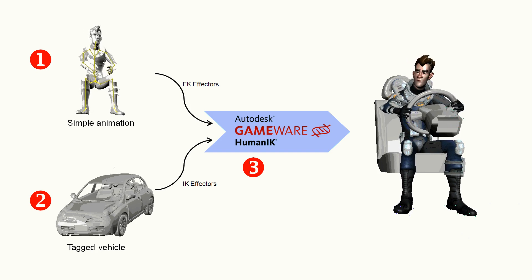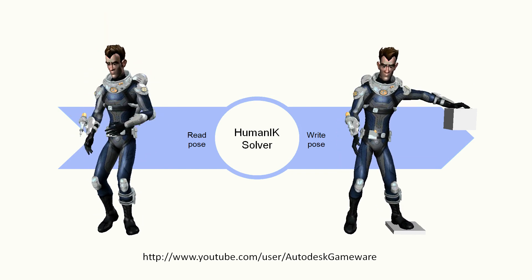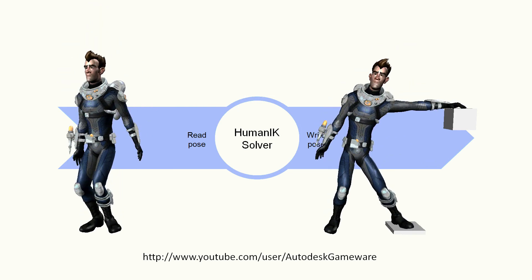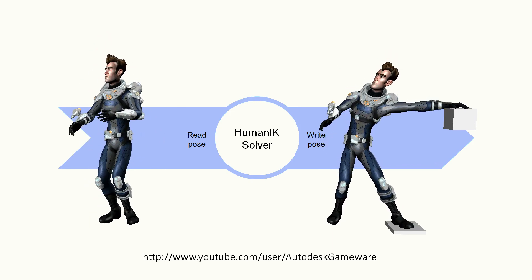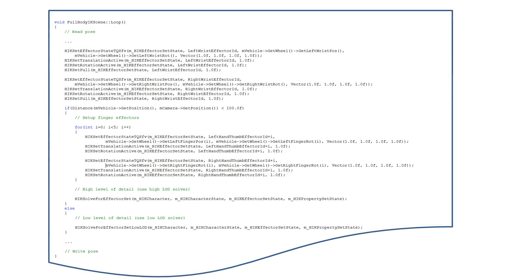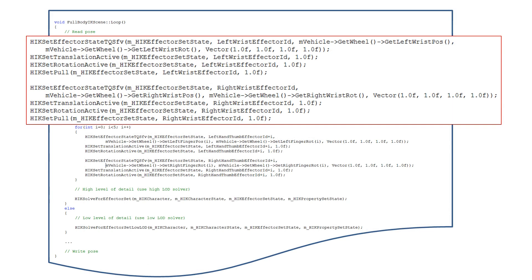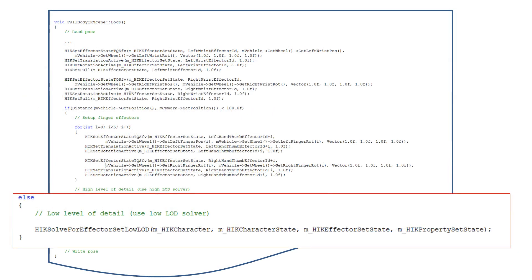I will not discuss all the C++ code you have to write to get to this point. Please take a look at the video named Integration on our YouTube channel — it covers in detail all the basic C++ steps that are still relevant to this driving example. The C++ initialization sequence does not require any change: we create a character from a characterization file, then create a character state to hold the input and output poses, then create an effector set state, and finally a property set state. In the main loop, we set up effectors for both the left and right wrist, retrieve target positions and orientations from the game engine vehicle object. When the character is close to the camera, we do high LOD setup — setting target positions and orientations for each finger — then call the solver. When further away, we simply call the low LOD solver.